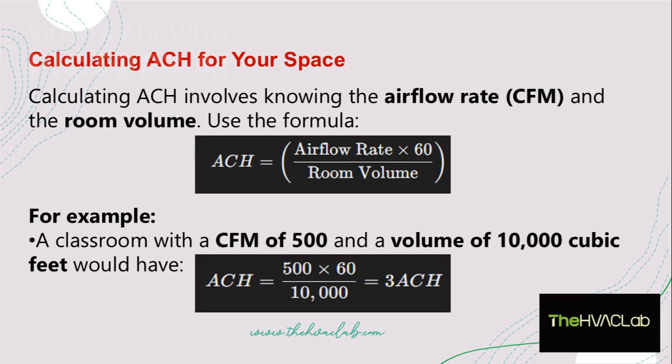To calculate ACH, you need to know the airflow rate and the room volume. For example, a classroom with a CFM of 500 and a volume of 10,000 cubic feet would have an ACH of 3.